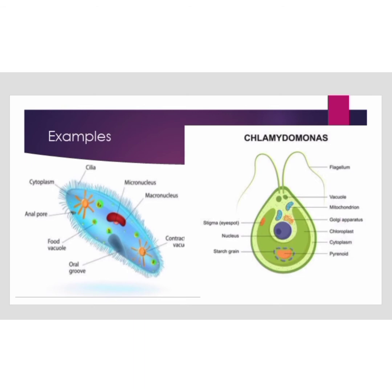Next, Chlamydomonas has a flagellum — an antenna-like structure used for movement. It also contains a vacuole, mitochondria, Golgi apparatus, chloroplast, cytoplasm, pyrenoid, starch, a green nucleus, and a stigma which is an eyespot. These are the examples of Kingdom Protista.